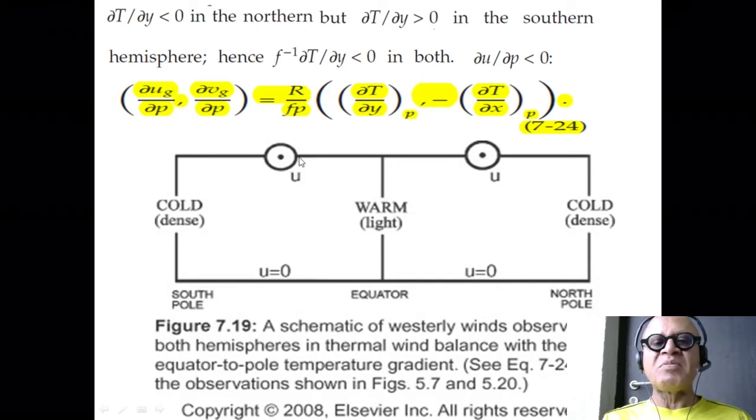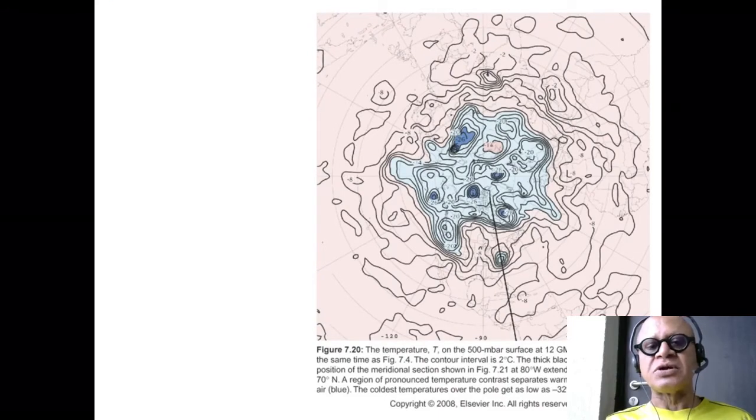Surely enough, if you remember our meridional section of zonal mean zonal winds, then you got jet streams in the upper troposphere and velocity is zero at the surface. So, as a large scale balance, thermal winds seem to be working. The temperature gradient, pressure gradient and the geostrophic shear are all working in the atmosphere.